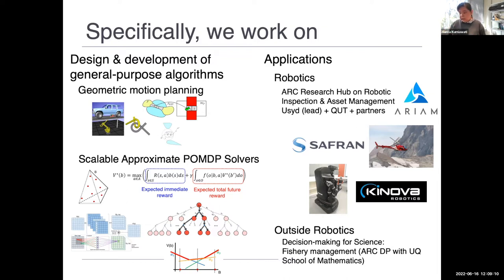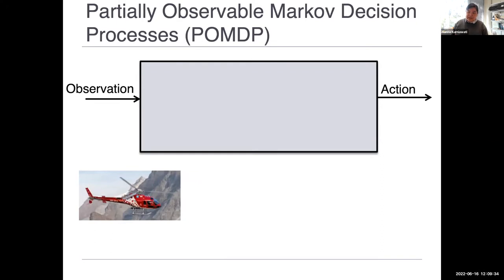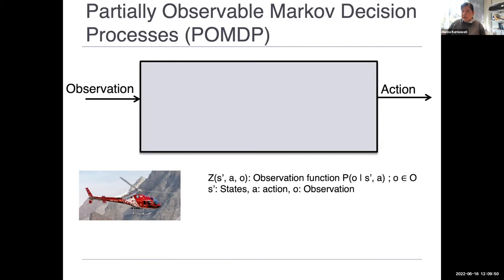Our algorithms can be classified into two areas. One is geometric motion planning — how robots can go from one configuration to another, avoiding obstacles, and how to compute this fast enough for high degrees-of-freedom robots. The other is enabling Partially Observable Markov Decision Processes, or POMDPs, to become practical. For today's talk, I'll focus on a particular subset of our work. Let me start with a brief introduction to what a POMDP is. In POMDP, we model how agents or robots interact with the environment — the robot perceives the environment via sensors and observations.